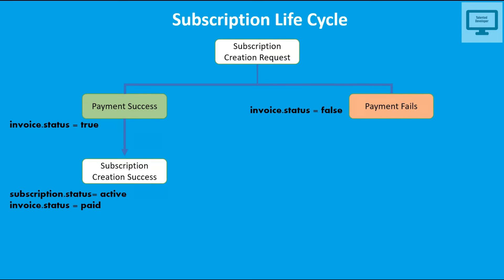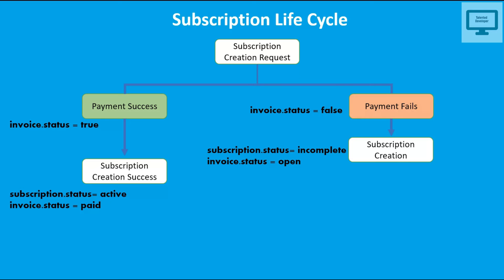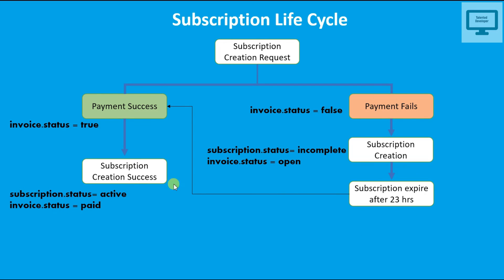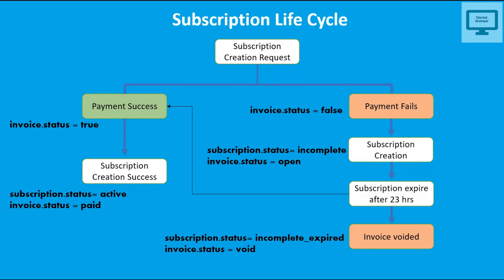In the worst case, if payment fails, the subscription request is still created but the invoice status is false — meaning payment failed. The subscription status becomes 'incomplete' and the invoice status is 'open', meaning the user has 23 hours to pay. If they pay within 23 hours, it follows the success process again. If they don't pay after 23 hours, the invoice is voided, the subscription status becomes 'incomplete_expired', and the invoice status is set to 'void' — meaning you cannot use that subscription and must create a new one.